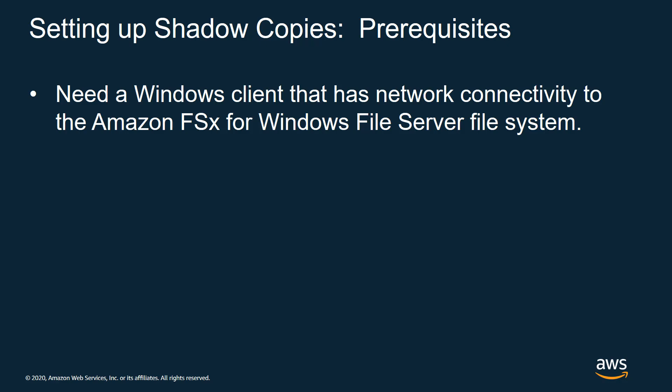Now let's talk about how to set up shadow copies. First, you'll need a Windows client that has network connectivity to the Amazon FSx for Windows File Server file system. This can be a Windows machine either on AWS, or on-premises if you have network connectivity to the Amazon FSx file system. When you set up the Amazon FSx file system, you specify which VPC, subnets, and security group will protect that file system. You need to make sure you have connectivity to those VPC subnets and allow that connectivity through the security group.